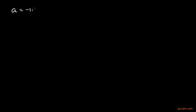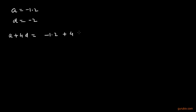We have the first term a equal to minus 1.2 and the common difference d equal to minus 2. Now we have to find the next three terms. The fifth term is a plus 4d, and a is minus 1.2 and 4 multiplied by minus 2, so we get minus 1.2 minus 8, which equals minus 9.2.